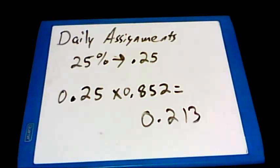We need to take both of those decimal numbers, the amount that the assignments were worth, and multiply them times how much he made on those assignments. So you need to take 0.25 times 0.852 and get 0.213.